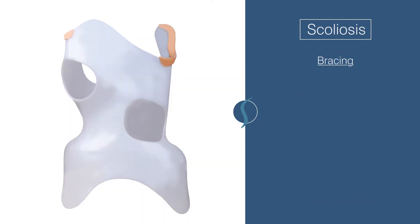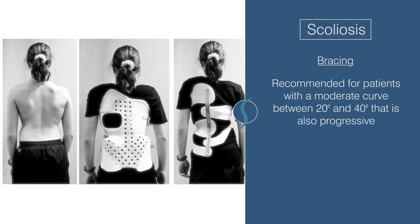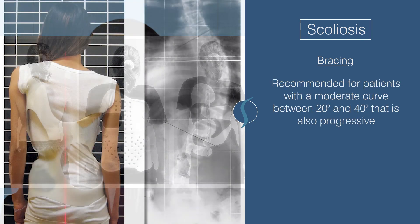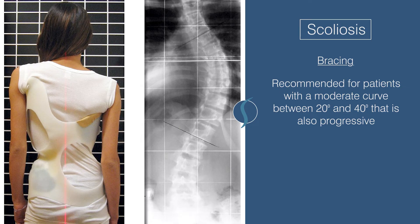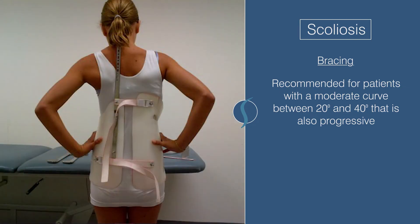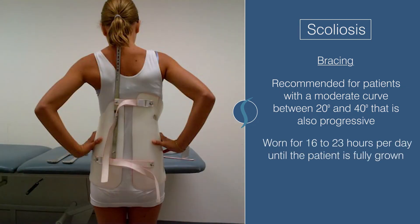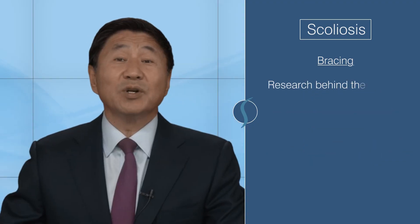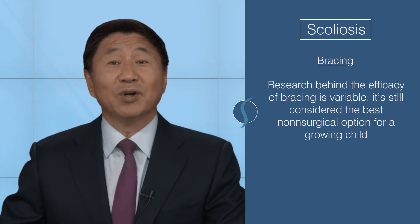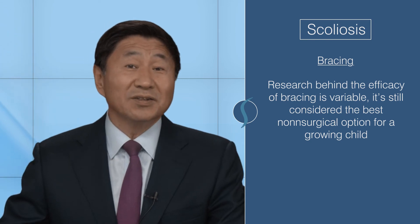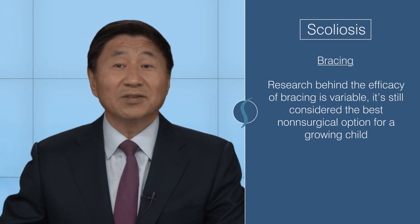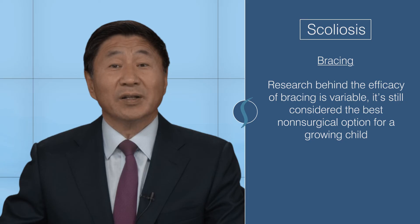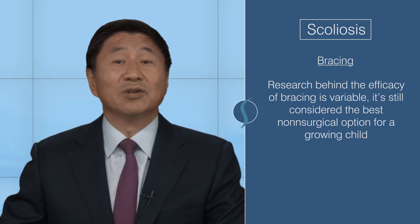Bracing has been used to prevent progression of scoliosis. It's typically recommended for patients with moderate curvature between 20 and 40 degrees that is also progressive. Braces are designed to be worn for 16 to 23 hours until the patient is fully grown. While the research behind the efficacy of bracing is variable, it's still considered the best non-surgical option for a growing child, and current developments look to improve its efficacy and overall usability.